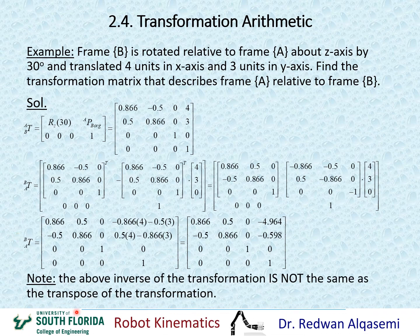The inverse of the transformation is not the same as the transpose of the transformation. Transposing means rows become columns and columns become rows, which will not equal the inverse of the transformation matrix.